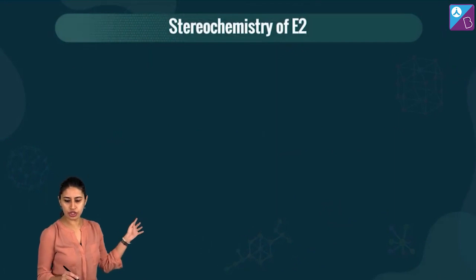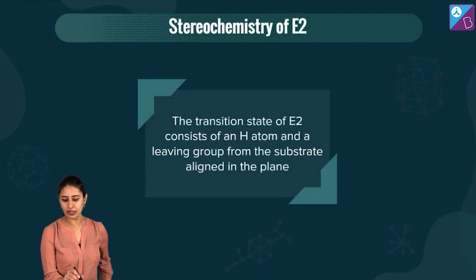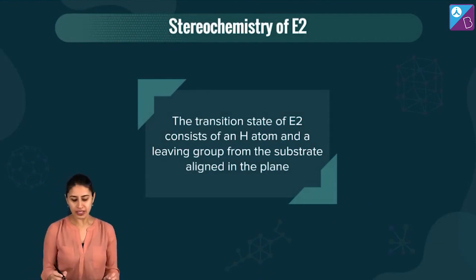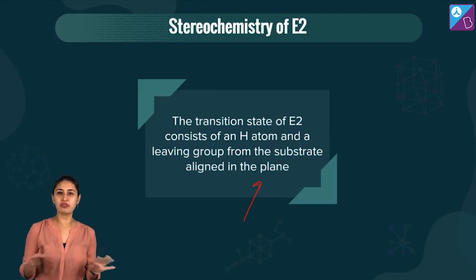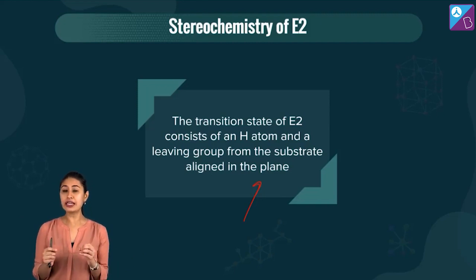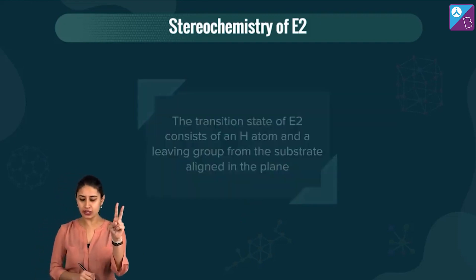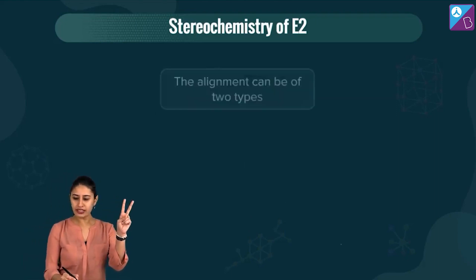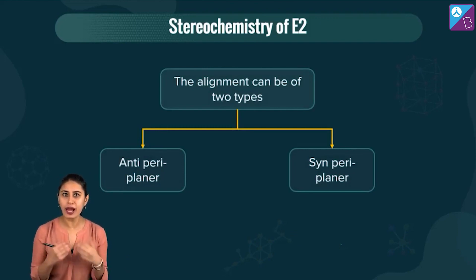The transition state of E2 consists of the hydrogen atom and the leaving group from the substrate aligned in a plane. The substrate is aligned in a plane because there is partial double bond character building up in the very formation of the transition state. In order to be in a plane, there are two possibilities. Planarity is there because partial double bond character is coming.